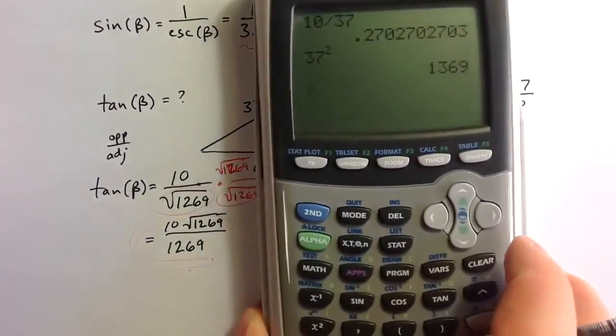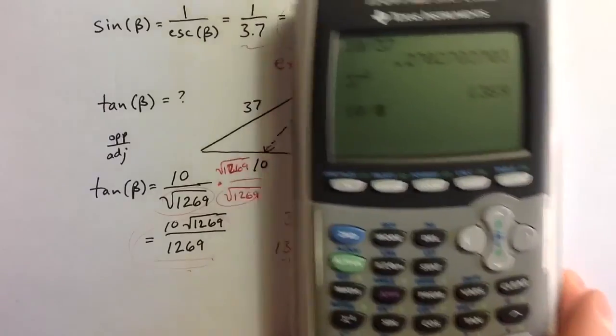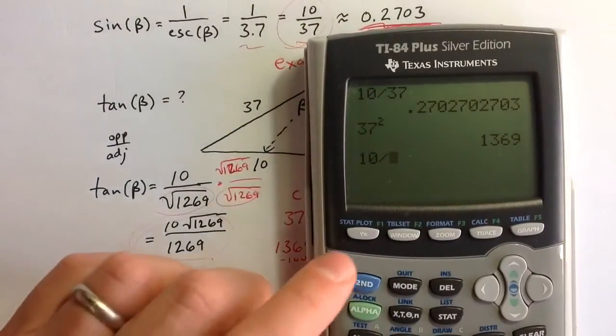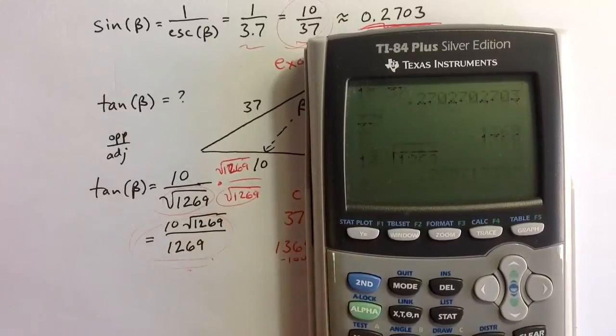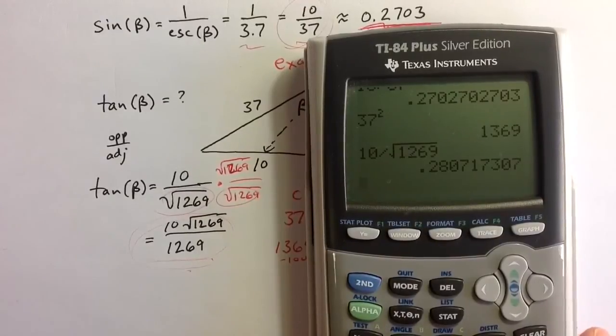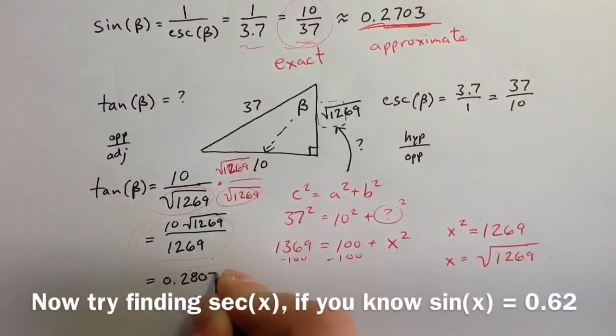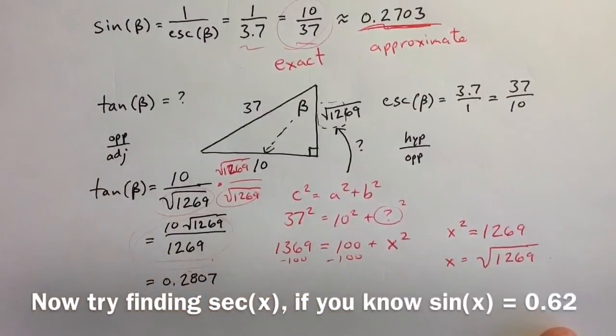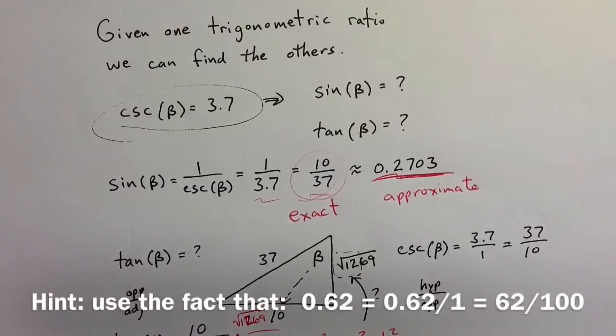We could of course with either of those find a decimal value. So if I take 10 divided by the square root of 1,269, I get a decimal value for tangent of beta of 0.2807. Since this video is getting a little long, we'll take a look at co-functions in the next video.